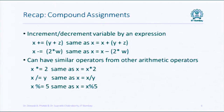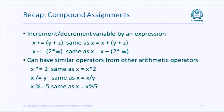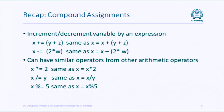There are also compound assignment operators which are shorthands. When we write x += y + z, it really means x = x + y + z — whatever is on the right-hand side of += is added to the current value of x and stored back. Similarly for -=, *=, /=, and %= . So x %= 5 means x will be assigned the remainder of x divided by 5.